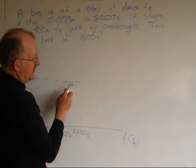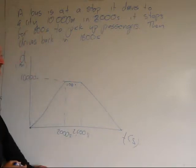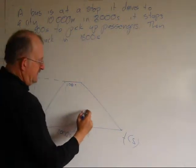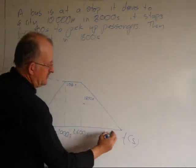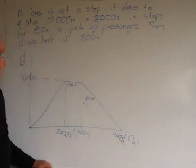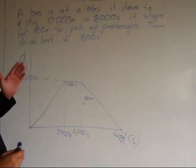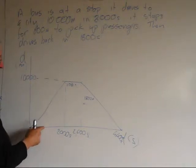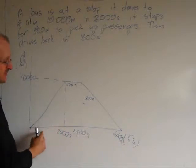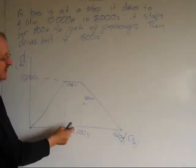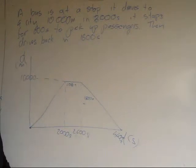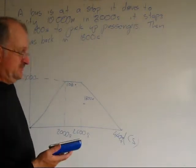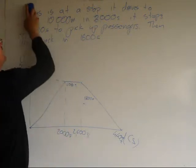The bus then starts back up again and drives back to where it started, and that takes 1,800 seconds — so it's a quicker trip back. That means at 4,400 seconds it's back where it started at zero meters. This means I can look at any point on the graph and tell how far away the bus is going to be. For example, at 2,500 seconds I know the bus is at the far end, and at 1,000 seconds I know it's halfway to its destination. It's a very useful tool.